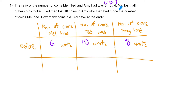Now let's construct the 'after' table. Mel had 6 units, so after losing half of it, she would be left with 3 units. Those 3 units are lost to Ted, so Ted will gain the 3 units to become 13 units.